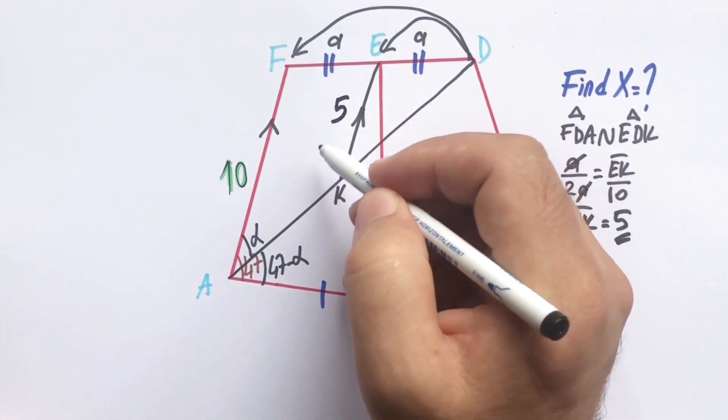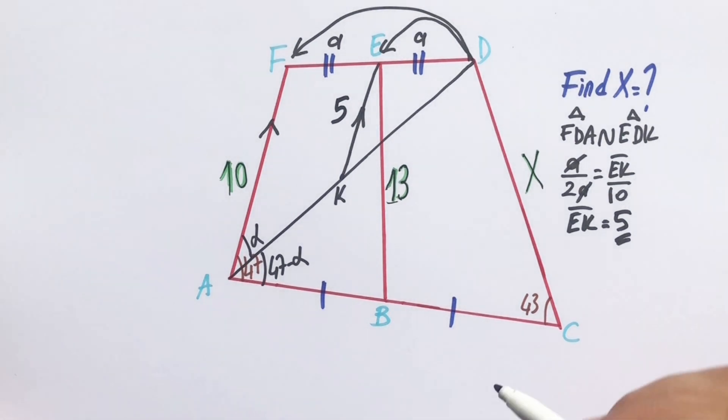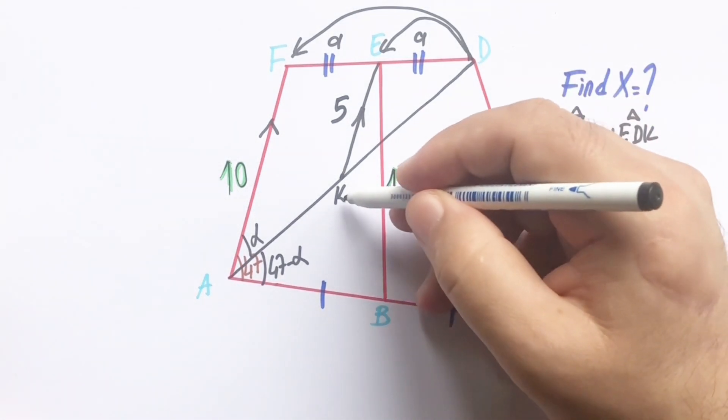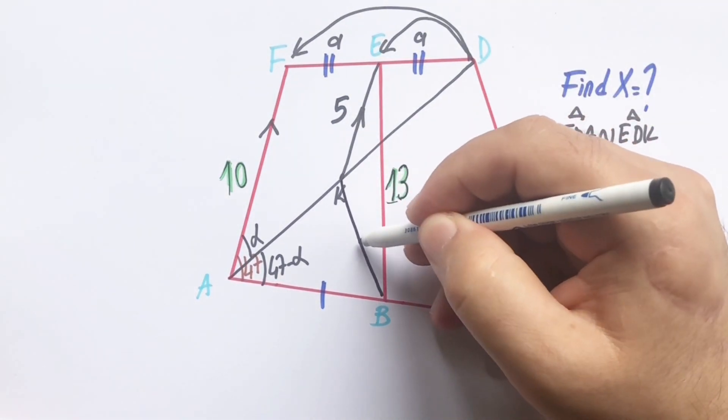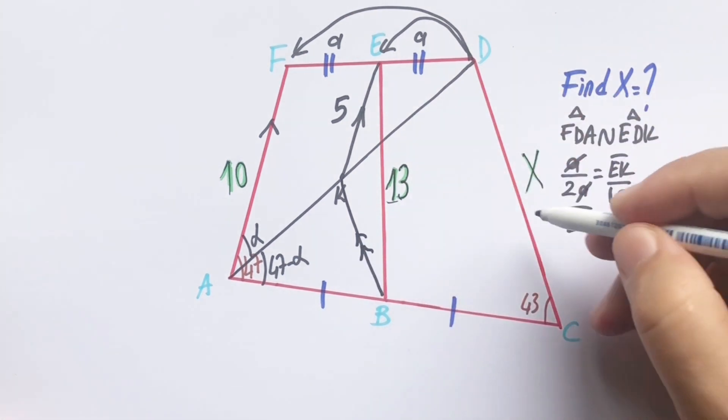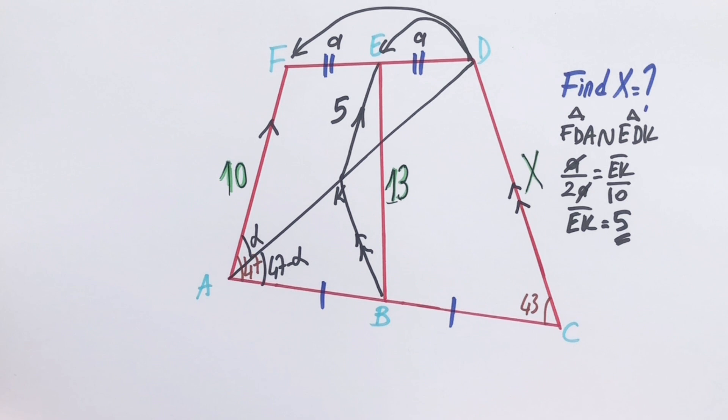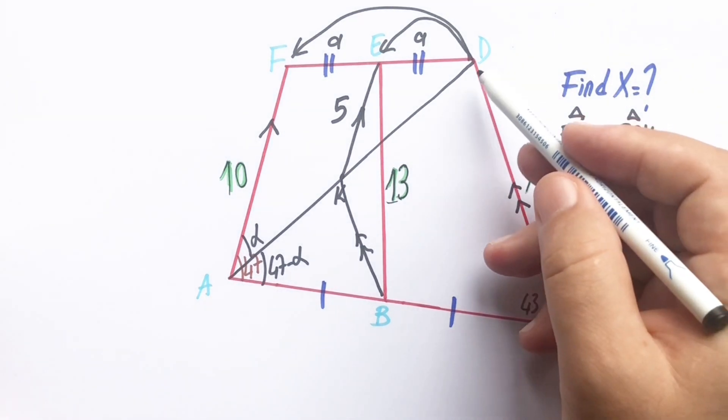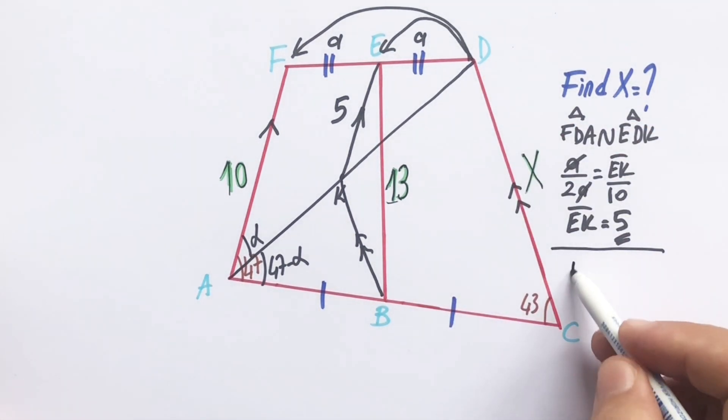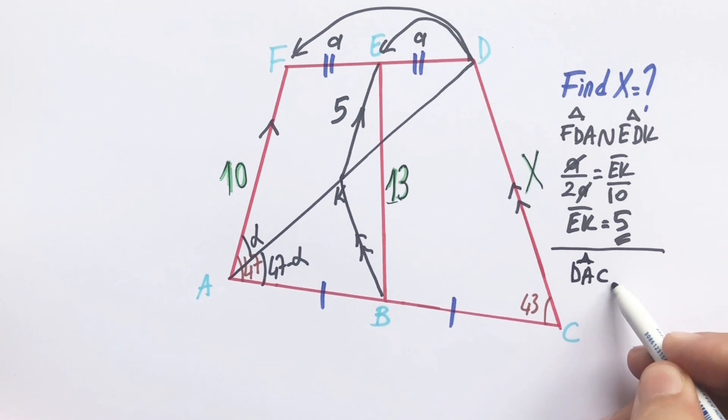Okay, here is 5. Let's draw a parallel line to DC. This time, DAC triangle and KAB triangle are similar.